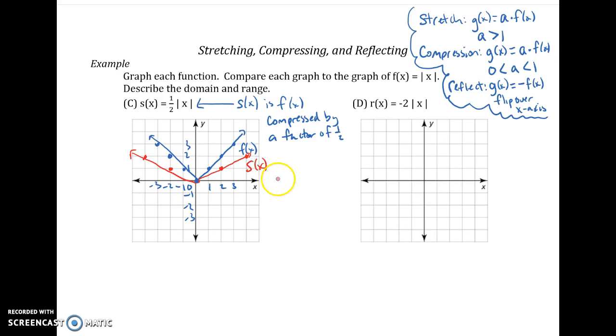And then domain and range, same as before. This domain, if you look at the arrows, goes on forever, all real numbers. And then range didn't go lower than 0, so still greater than or equal to 0.